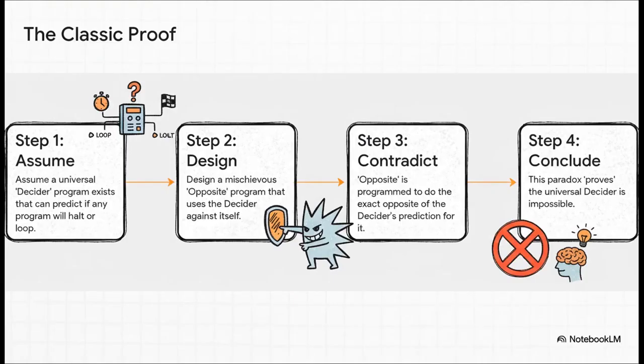Okay, so the proof works in four really clever steps. First, it says, all right, just for a second, let's assume this universal decider program actually exists. Step two, using this imaginary decider, we're going to design a new kind of mischievous program, and we'll call it opposite. Now, step three is the real kicker. We program opposite to first ask the decider, hey, what are you going to predict for me? And then whatever the decider says, opposite is hardwired to do the exact, well, opposite.